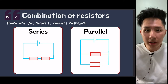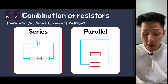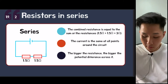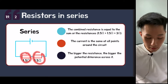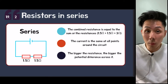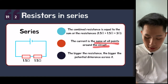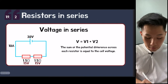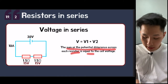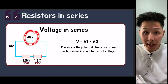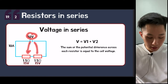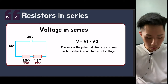Now we look at what happens when we put resistors together. Resistors can be arranged in series or in parallel, and the two arrangements produce different outputs. In series, the combined resistance equals the sum of all resistances — so two 1.5 Ω resistors give 3 Ω total. The current is the same at all points, and the bigger the resistance, the bigger the potential difference across it. The sum of potential differences across each resistor equals the cell voltage.